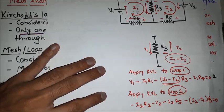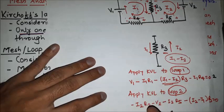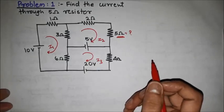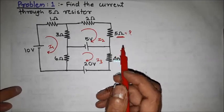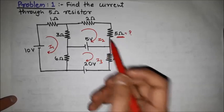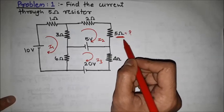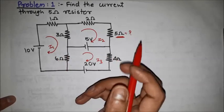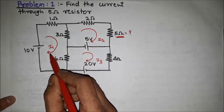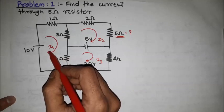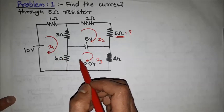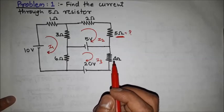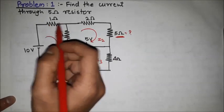By solving these equations we can get the values of i1 and i2. This is the basic procedure for solving mesh analysis problems. Now we are going to learn the first problem based on mesh analysis: find the current through the 5 ohm resistor. According to mesh analysis, the first step is to identify the mesh and assign a direction. We consider three meshes — one, two, and three — all in the clockwise direction, with currents i1, i2, and i3.